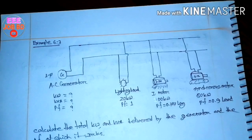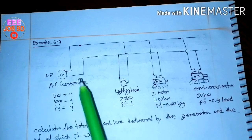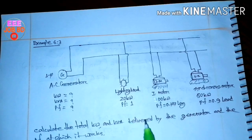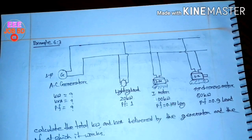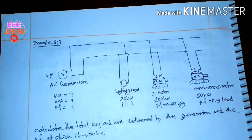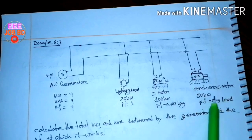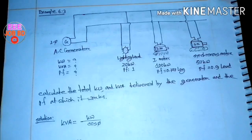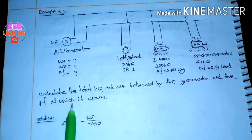This is example 6.3. A single-phase AC generator supplies the following loads. Calculate the total kW and kVA delivered by the generator and the power factor at which it works.